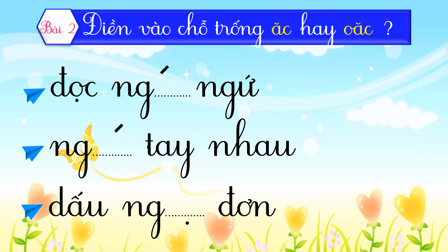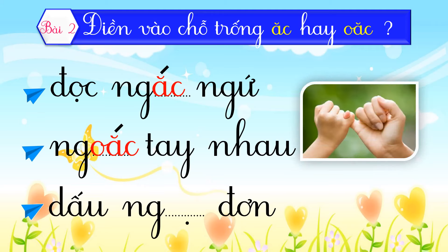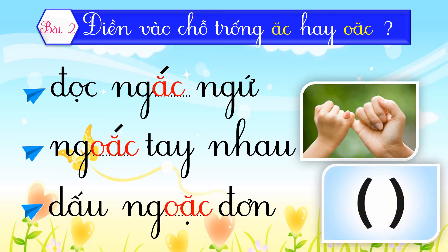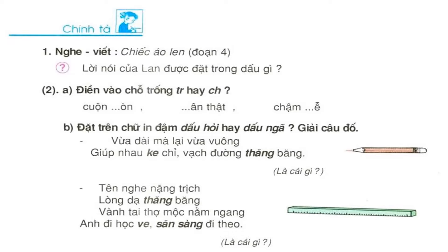Chúng ta cùng kiểm tra. Đầu tiên: 'đọc ngắc ngứ' — ta điền vần 'ắc'. Đọc ngắc ngứ là đọc chưa giỏi, chưa trôi chảy. Tiếp theo: 'ngoắc tay nhau' — ta điền vần 'ắc'. Khi ngoắc tay nhau thì ngón út của hai người móc vào nhau, thể hiện sự đồng ý hoặc nhất trí của hai người về một việc gì đó. Cuối cùng: 'dấu ngoặc đơn' — ta điền vần 'ặc'. Dấu ngoặc đơn có tác dụng để đánh dấu cho phần chú thích thêm ở trong câu, và thường xuất hiện nhiều trong sách giáo khoa.